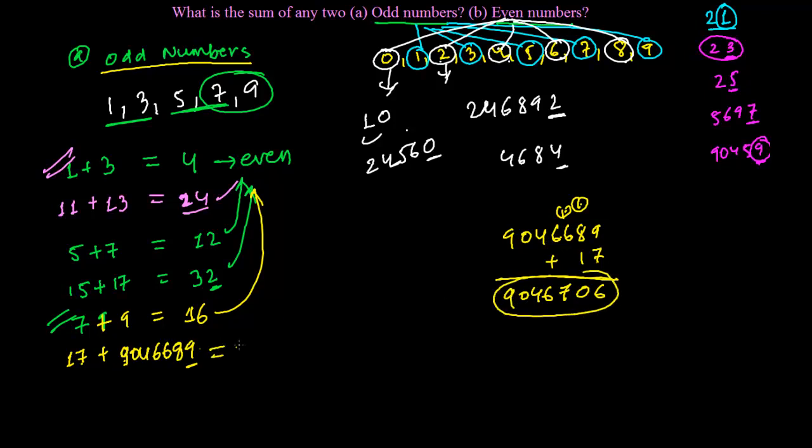So see, now this is the new number that I have got. My new number is 9046706. This is the new number formed after adding 2 odd numbers, and since this new number is going to end with 6, it means again it is an even number.